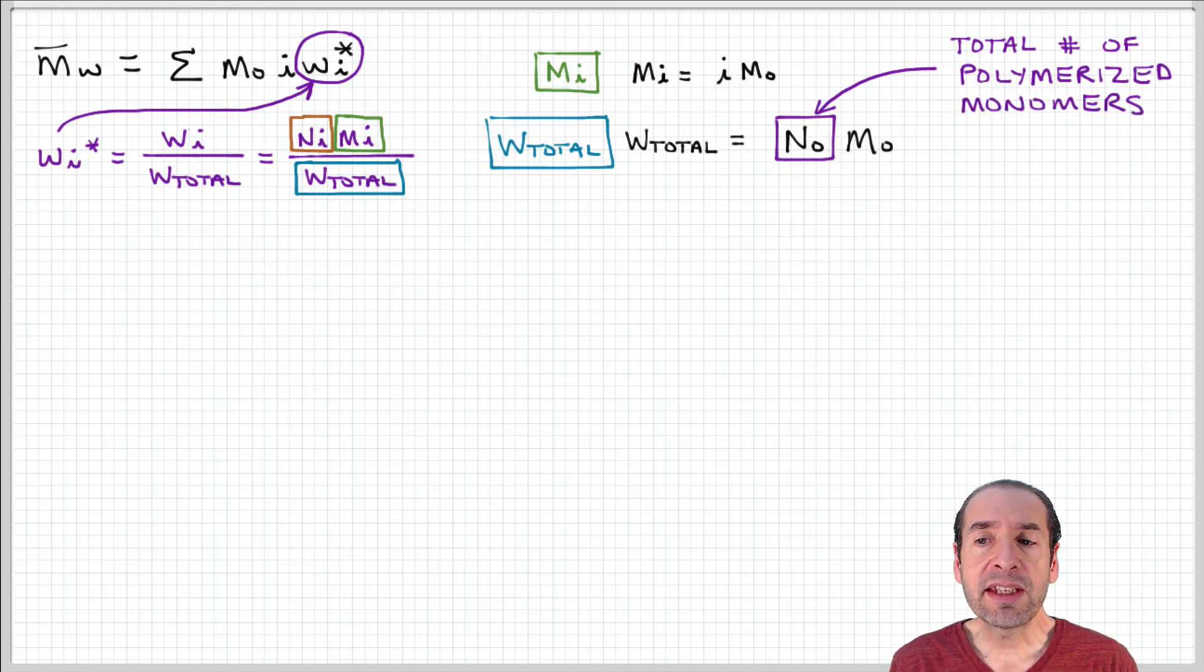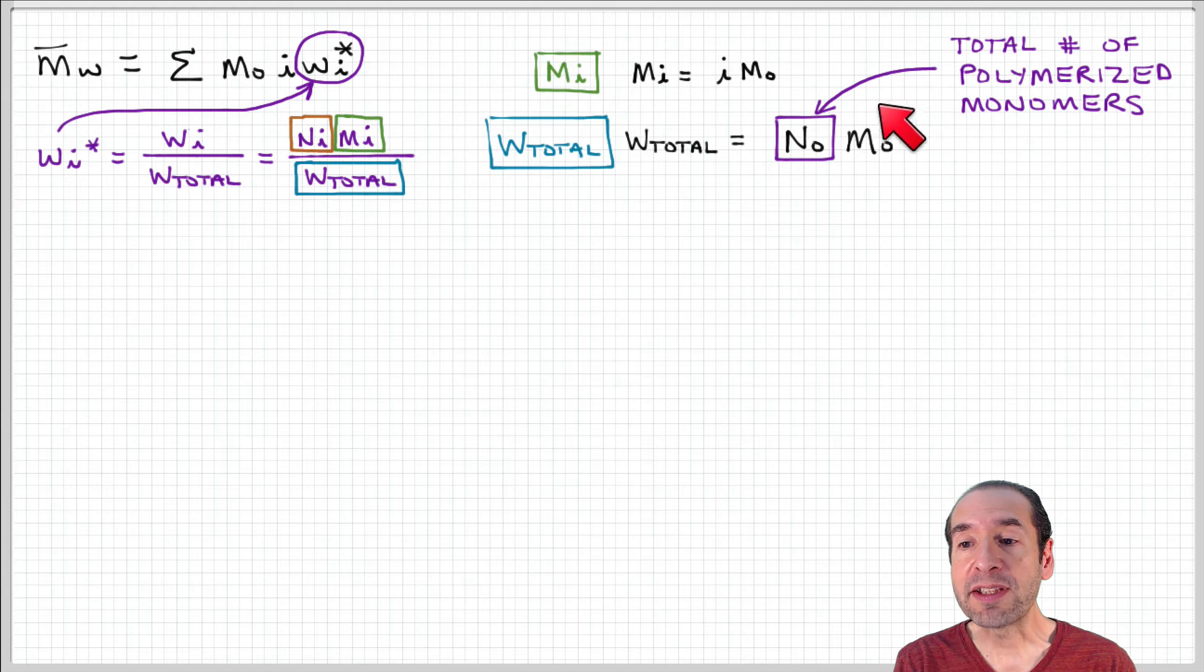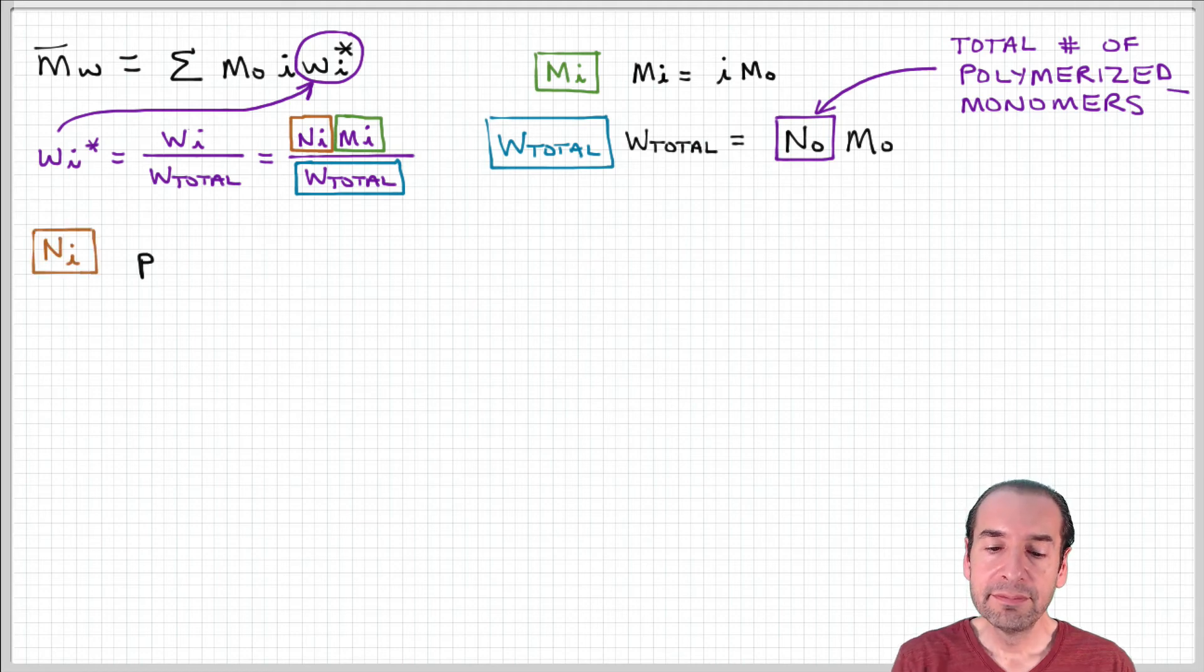We can express that in terms of the product of the total number of polymerized monomers times the monomer molecular weight. Because remember, we don't care about how these monomers are distributed among polymers. The total weight is just related to the number of monomers that have been polymerized. This term N-naught is the total number of polymerized monomers.